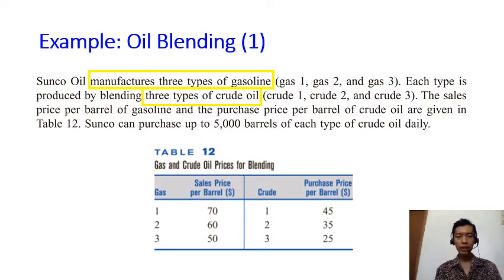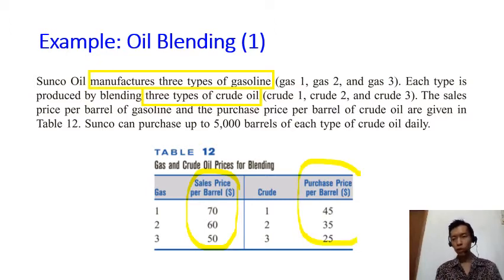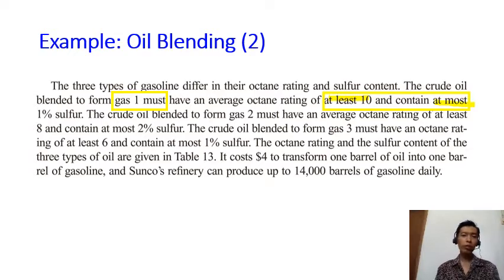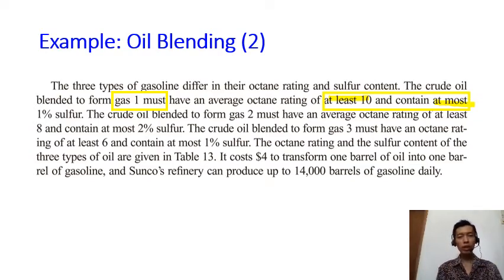In table 12 you are given the sales price of your final products. To do the manufacturing process you need to purchase crude oil as raw materials, and each type of crude oil has its own purchase price per barrel. The final products gas one, gas two, and gas three have some requirements. When you read a problem and see the words 'must,' 'at least,' or 'at most,' you know those sentences are talking about constraints.